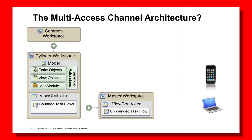In considering the Multi-Axis Channel Architecture, one of the things you'll see in this diagram is we're using the same diagram elements as previous. We have a common workspace — a cylinder workspace — made up of business components and bounded task flows in the model and view controller projects respectively, published by an ADF library jar and reconsumed by a master workspace, everything published through an unbounded task flow. That particular delivery mechanism is well suited to access through a web browser running on a laptop or desktop, ultimately serving HTML over HTTP.